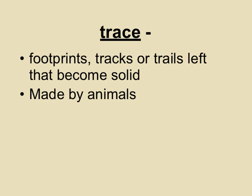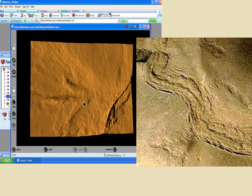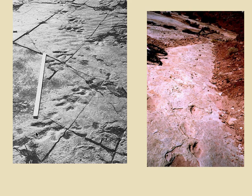The third type is a trace fossil — footprints, tracks, or trails left behind, usually by animals, that become solid. Here you can see this is some sort of bird or dinosaur footprint, and this is like a little burrow. Here you have lots of little footprints cruising around, and here you have bigger footprints — trace fossils.